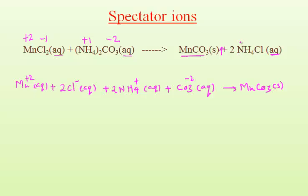Ammonium chloride is made up of ammonium ion and chloride ion. Ammonium ion shows plus 1 charge and chloride ion shows minus 1 charge. There are two moles of ammonium chloride, so it produces two moles of ammonium ions and two moles of chloride ions.